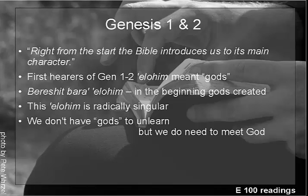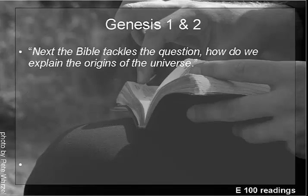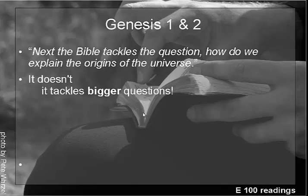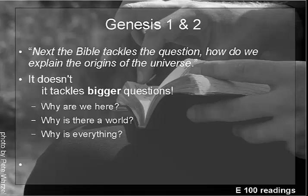Those very first words are really important. The second paragraph of the notes, I'm afraid, is just plain wrong. It says that next the Bible tackles the question 'how do we explain the origins of the universe?' It doesn't. This isn't a just-so story, not even one dictated by God. It tackles the bigger questions: why are we here, why is there a world, why is everything — including people — what's it all about, what's it all for? Those are the questions that these chapters tackle, and they're much bigger and more important questions than how we explain the origins of the universe.